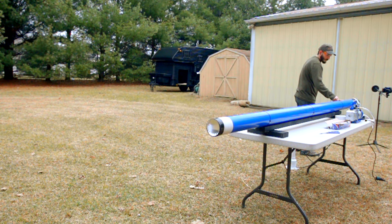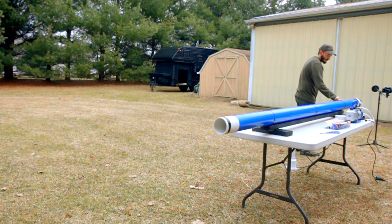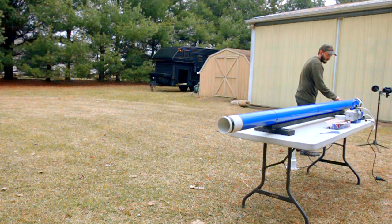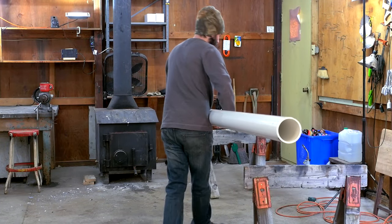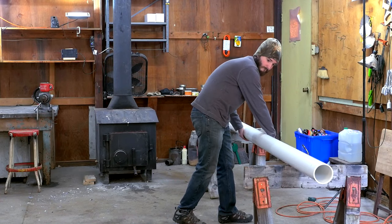Because there is no valve or combustion chamber required, the design of a vacuum cannon can be very simplistic. Mine will be made from a 10-foot long, 4-inch diameter section of PVC pipe.